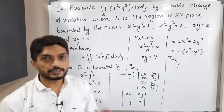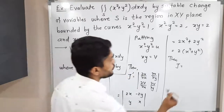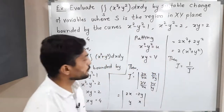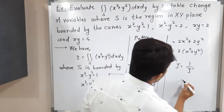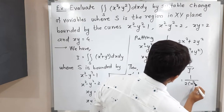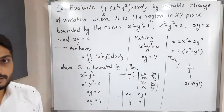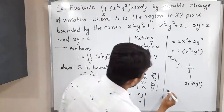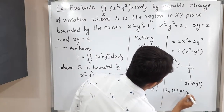We calculated J', but we actually want the Jacobian. The Jacobian equals 1/J', so the Jacobian = 1 / [2(x² + y²)]. This is our Jacobian.